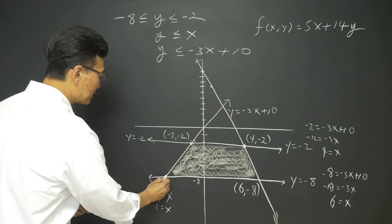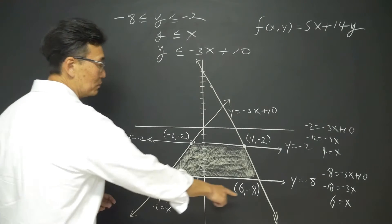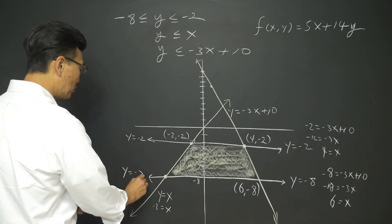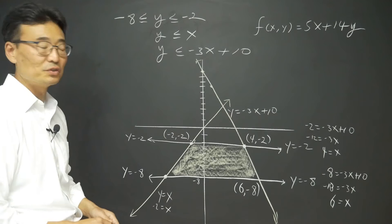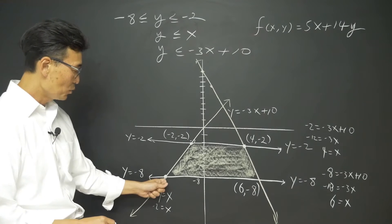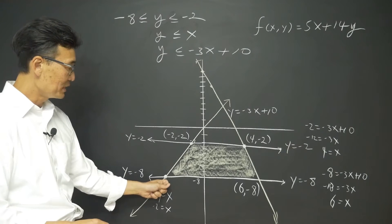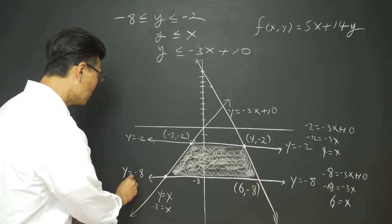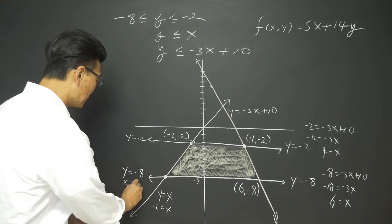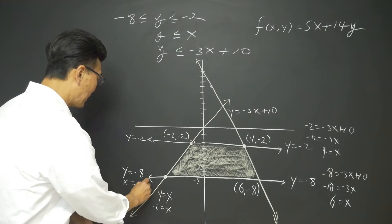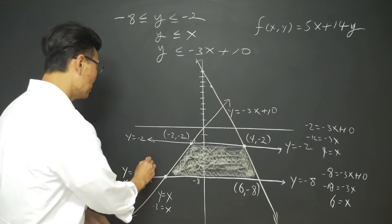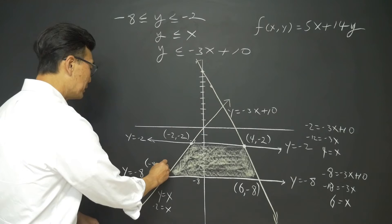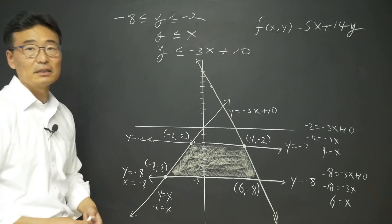Lastly, this point is on the equation y equals negative 8. Since it's also on the line y equals x, that means x equals negative 8 as well. So this point has a coordinate of negative 8 comma negative 8.